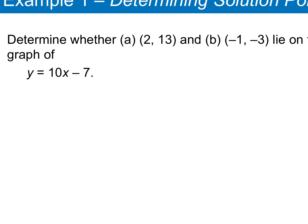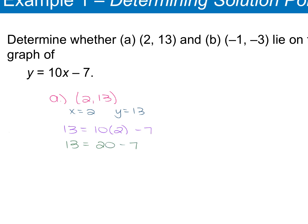For example 1a, we have the function y = 10x - 7 with ordered pair (2, 13). Our x is 2 and our y is 13, so we plug these into the equation: 13 = 10 times 2 minus 7. That gives us 13 = 20 - 7, which is 13 = 13. Since this is a true statement, the ordered pair (2, 13) is a solution.